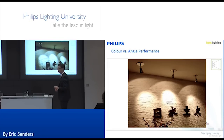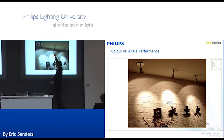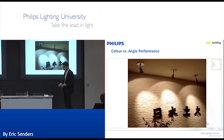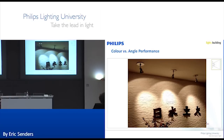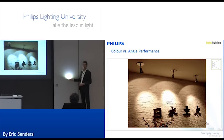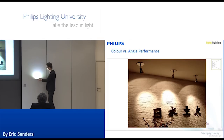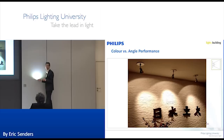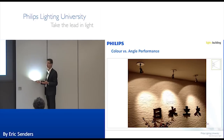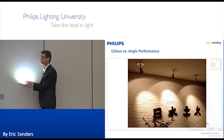The fourth element is color over angle. Color over angle means you get a similar color when looking at a luminaire from the side compared to what you get in the beam itself. What is currently standard in the market is a solution where there is a noticeable color difference between the side and the beam — this is what everybody is making.